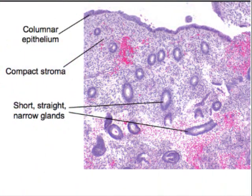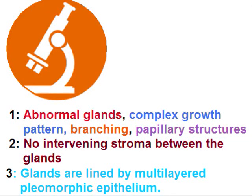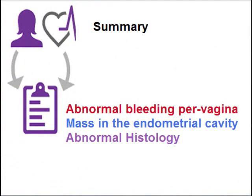For comparison, normal endometrium shows abundant stroma with few glands that are regular and round in shape, lined by normal epithelium. To summarize the microscopic features of endometrial carcinoma: abnormal glands with a complex growth pattern, branching papillary structures, no intervening stroma between the glands, and glands lined by pleomorphic epithelium.